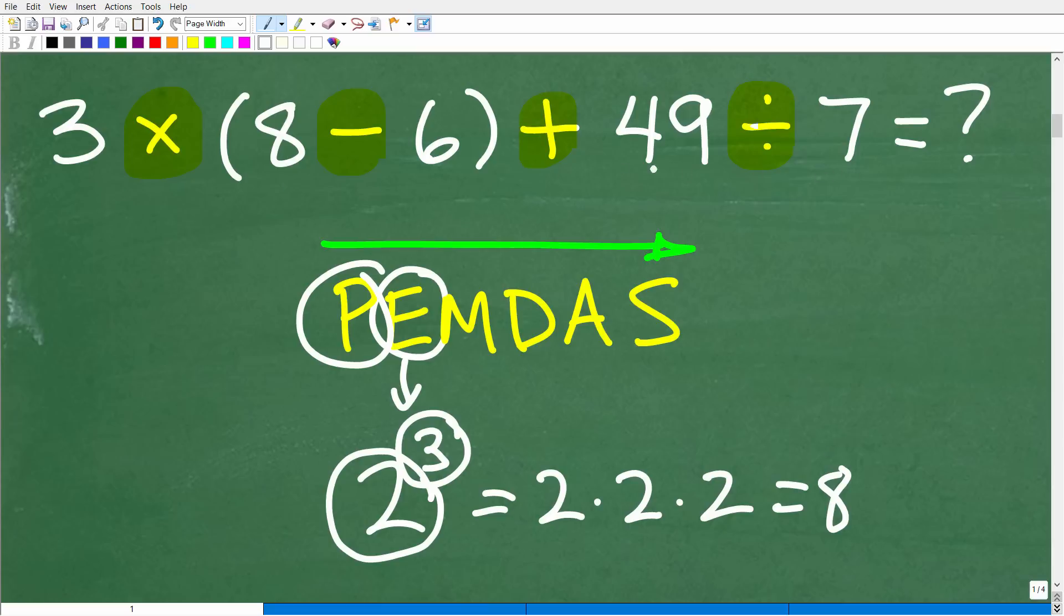But, again, not every single problem will have a power in it or an exponent, so you just continue to move forward on our checklist. Okay, so, again, we have parentheses. We have exponents. Now, let me go ahead and tell you what the rest of these letters stand for. So M stands for multiplication, D stands for division, A stands for addition, and S stands for subtraction.